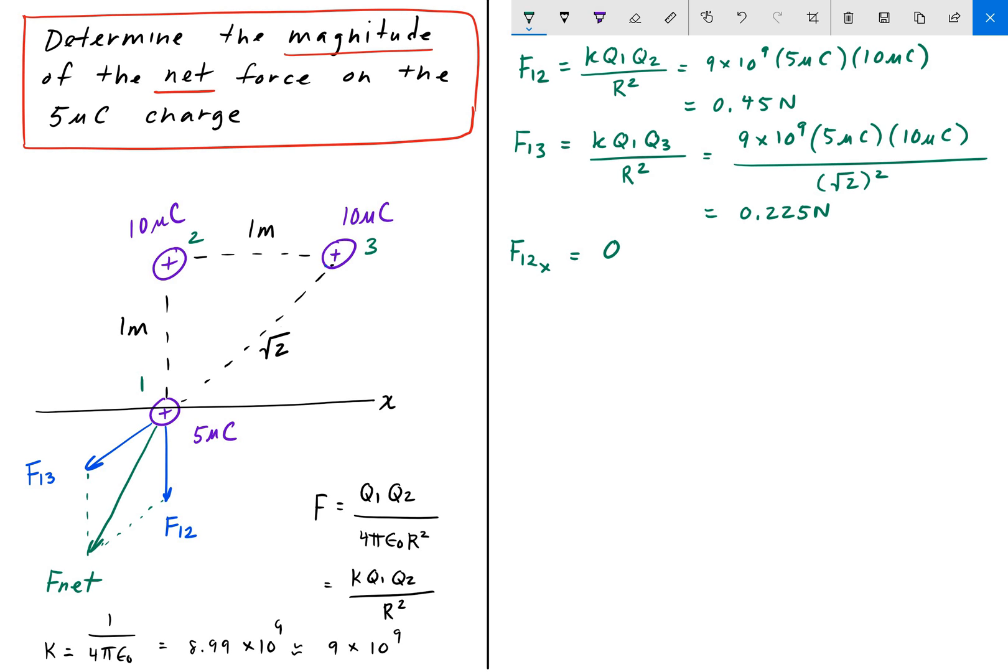So the X direction is nothing, right? So it's 0. So F12 only has a Y direction. F12 has a Y direction of minus 0.45 newtons. So those are the components of the force 12.